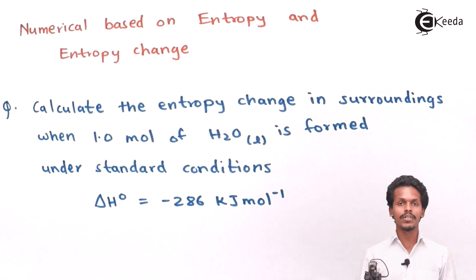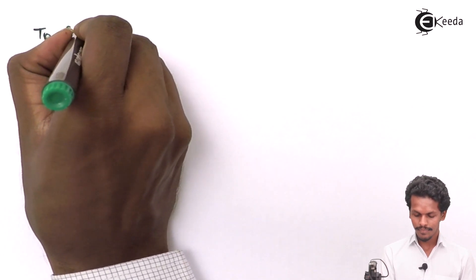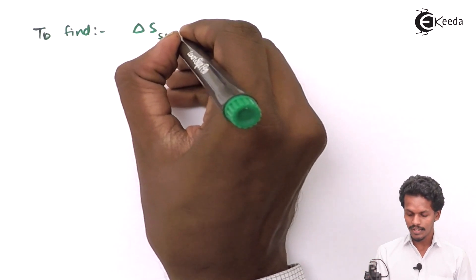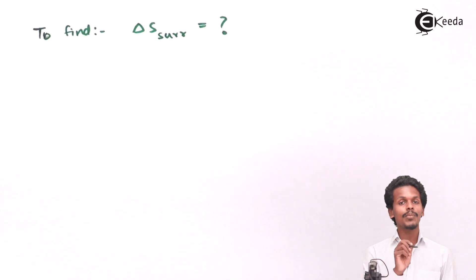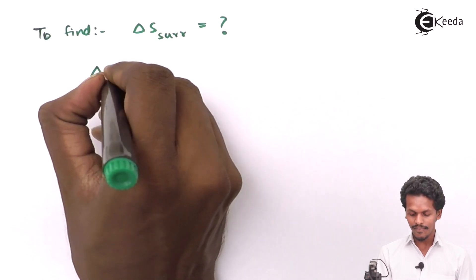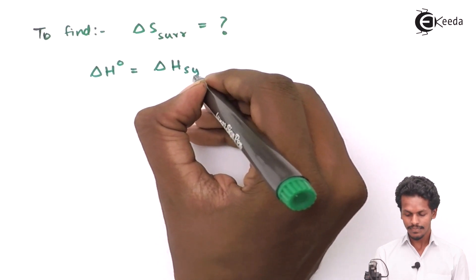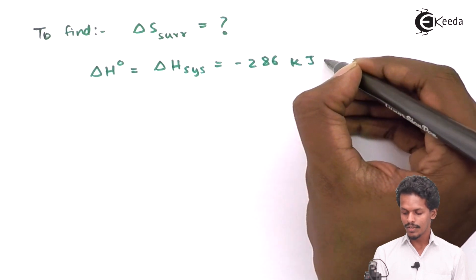In this case, what they have mentioned is that we have to calculate the entropy change in the surroundings — not of the system, but of the surroundings. The value given to us, the enthalpy change of minus 286 kJ per mole, is actually for the system.